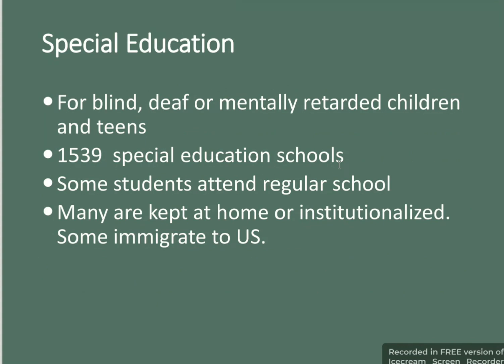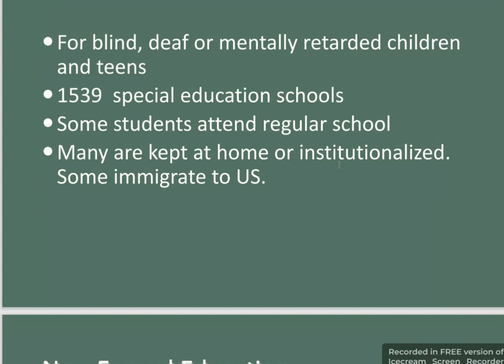Special education is provided for blind, deaf, or mentally retarded children and teens through 1,539 special education schools. Some students attend regular schools, while others may be kept at home or institutionalized, including some immigrants to the US.